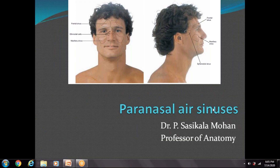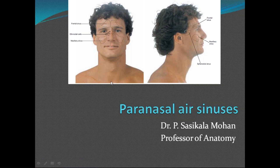You know about the paranasal air sinuses. They are air-containing bony spaces around the nasal cavity. You can see these paranasal air sinuses around the nasal cavity. They are lined by mucous membrane, which is made up of pseudostratified ciliated columnar epithelium. They are present in and around the nasal cavity and around the orbit, so their location is mainly around the orbit and the nasal cavity.